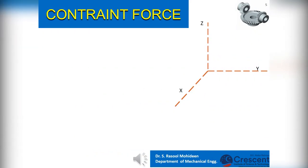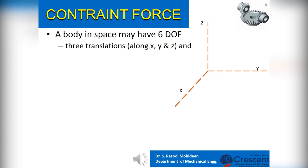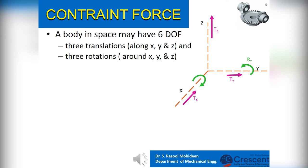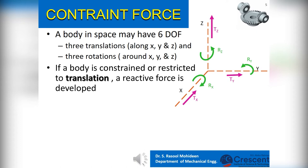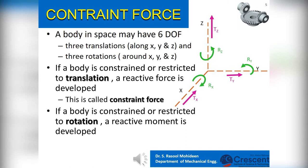Let us see in detail about constraint forces. A body in space may have six degrees of freedom — namely three translations along X, Y, and Z, and three rotations around X, Y, and Z. If a body is constrained or restricted from translation, a reactive force is developed; this is called a constraint force. If a body is constrained or restricted from rotation, a reactive moment is developed; this is known as a constraint moment.